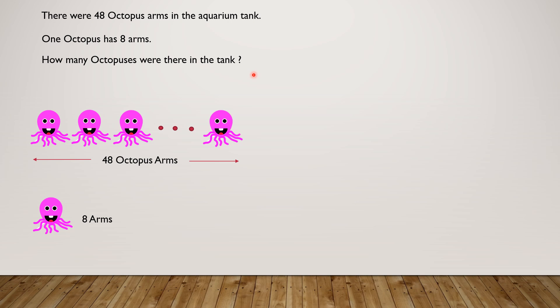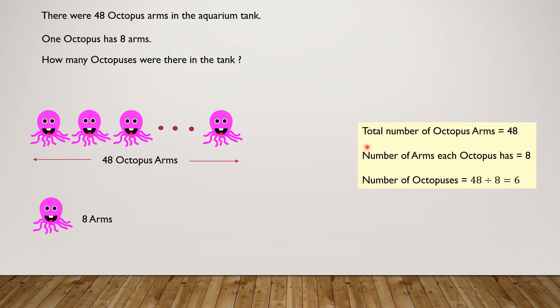We have to group them, so we'll have to do division. Total number of octopus arms are 48. Number of arms each octopus has are 8. So the number of octopuses must be 48 divided by 8, which equals 6.